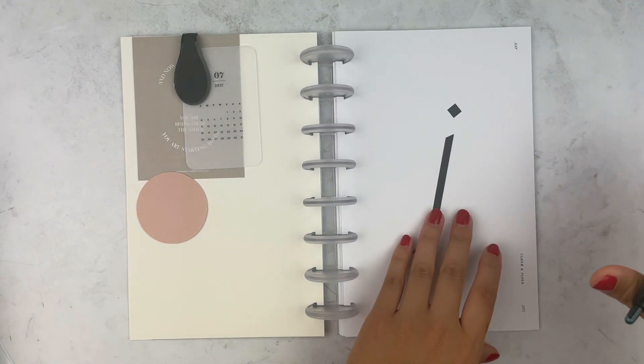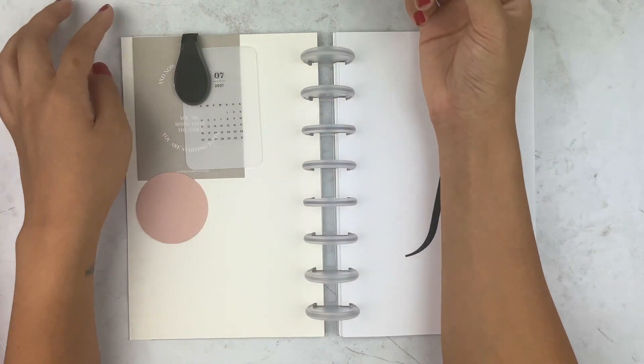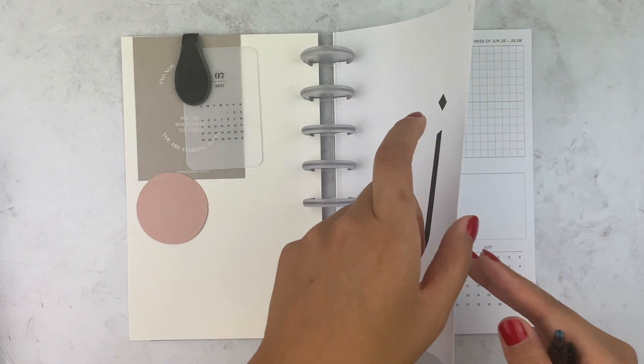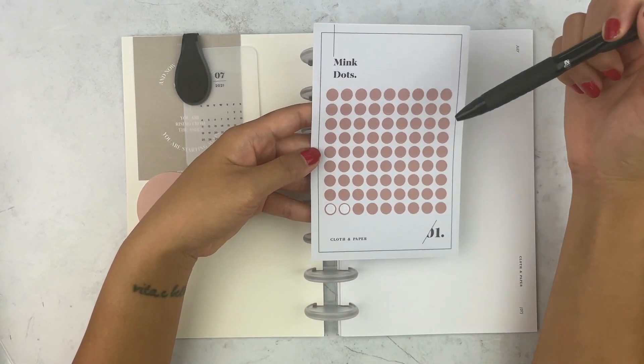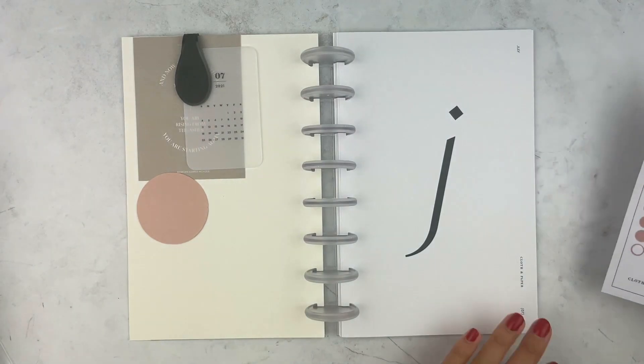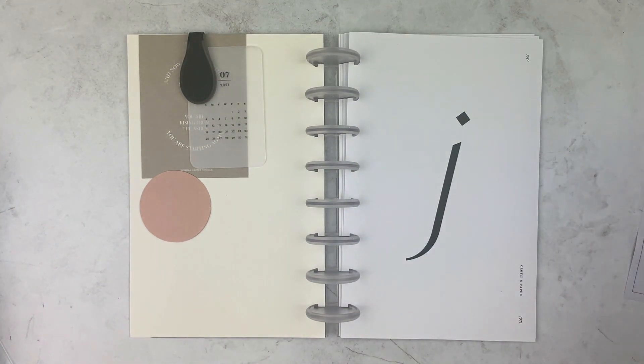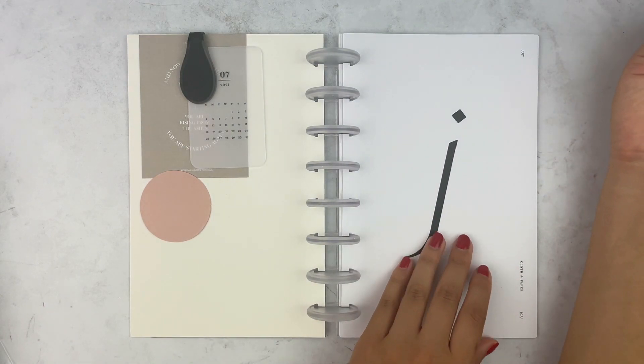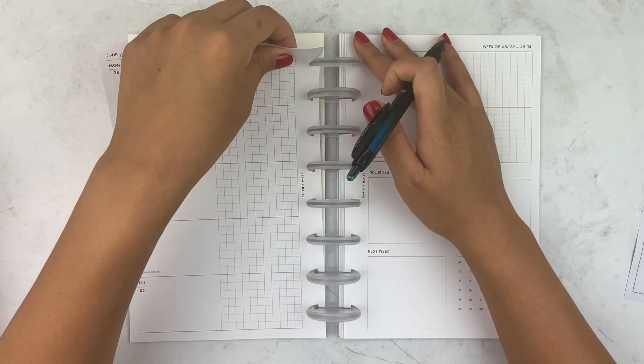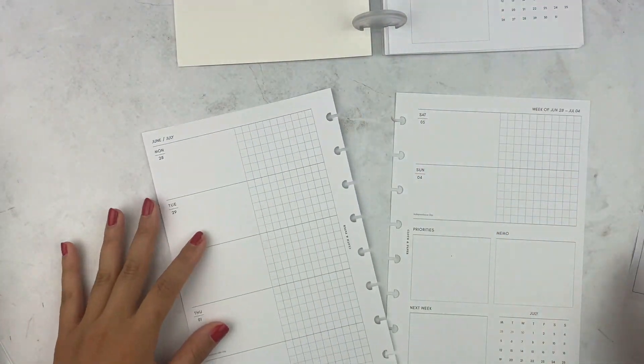But anyway, it is what it is. So the inserts are just the Cloth and Paper week on two pages. That came in the June box. And then I just have my black Ollie clip, some journaling cards and stuff like that. And then these little sticky post-it notes from Cloth and Paper. And then I'm going to be using these mini dots from Cloth and Paper. These were kindly gifted to me from Martha of Plan Dot with Martha on Instagram. So yeah, anyway, I think that's enough of an intro. I'm just going to get into planning for this week.